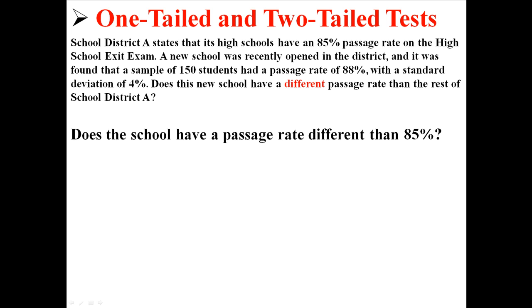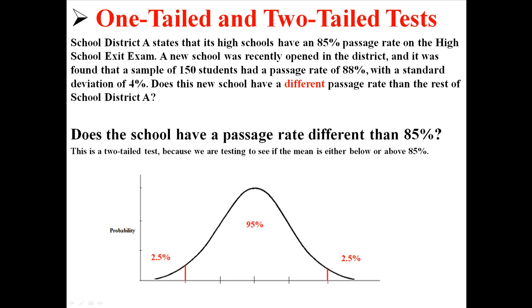The question here is: does the school have a passage rate that is different than 85%? This is a two-tailed test because we're testing to see if the mean is either below 85% or above 85%, because it just has to be different. So if the alpha was 0.05, our distribution would look something like this, with tails on either side because it's a two-tailed test.